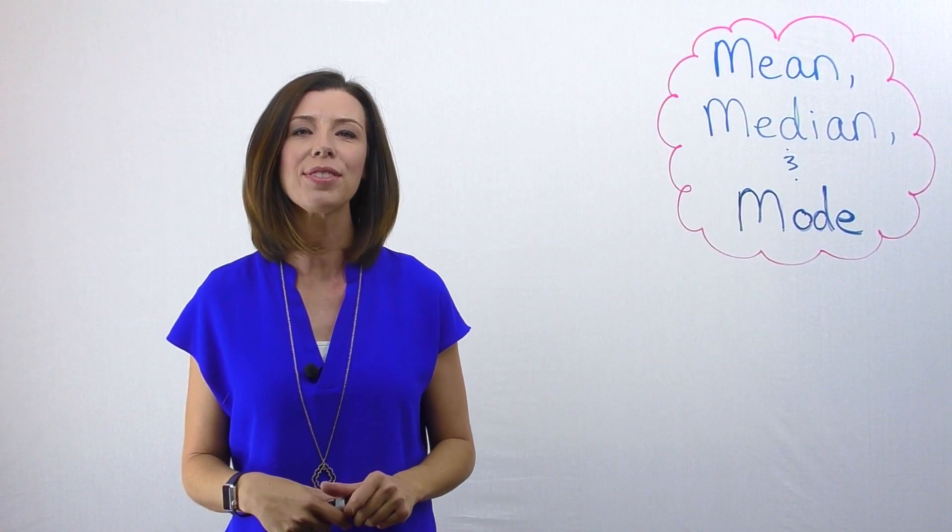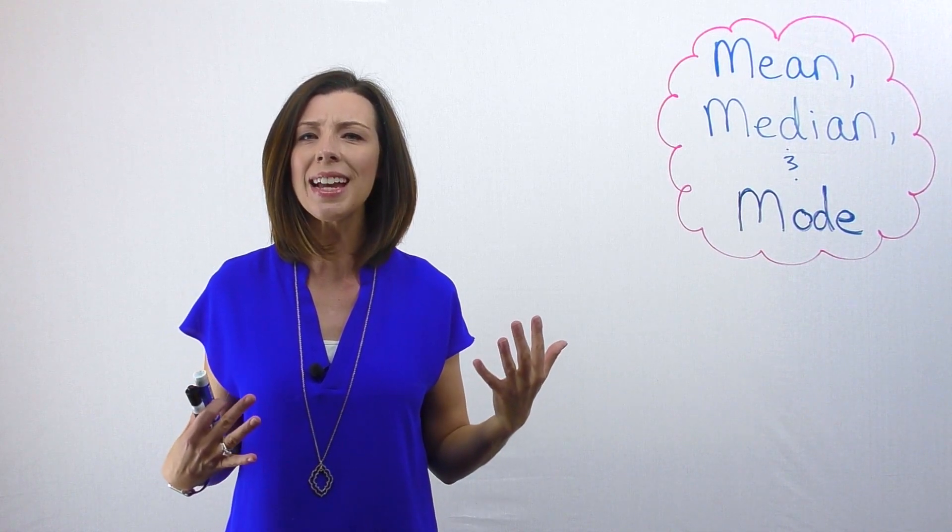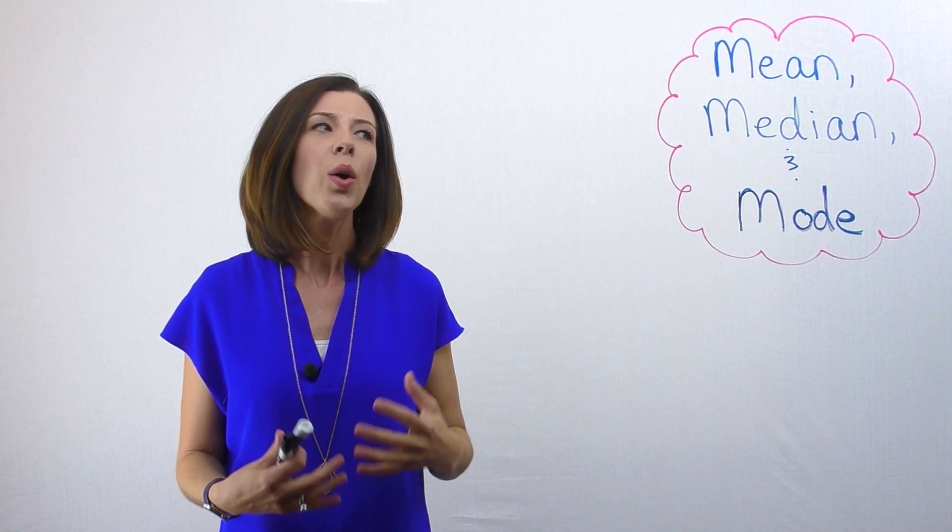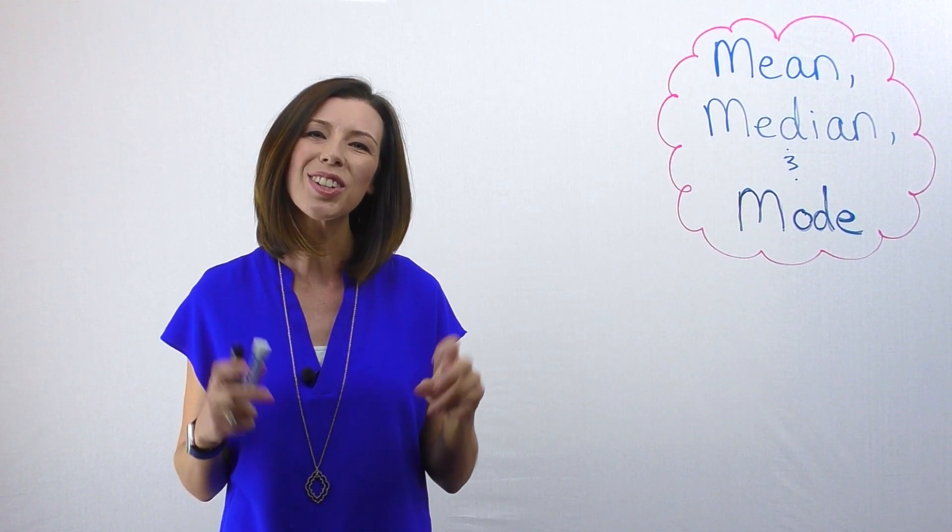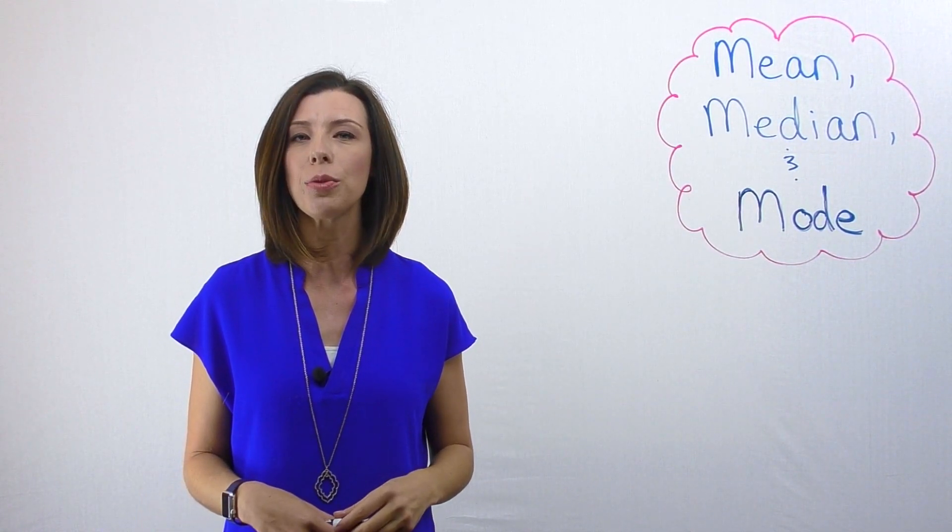Let's talk about three types of central tendencies: mean, median, and mode. When I say central tendencies, I mean we're literally looking at the center of the data. These are three different ways to look at that, depending on our situation.